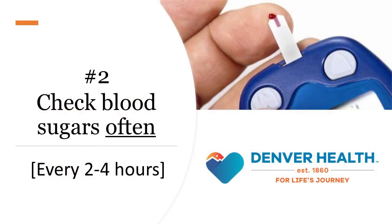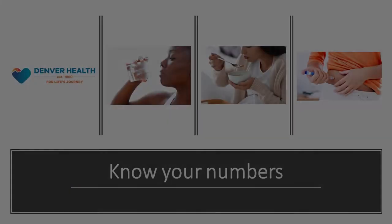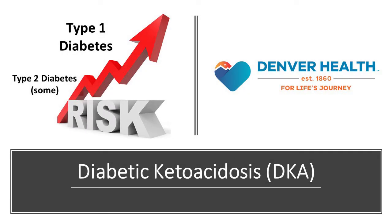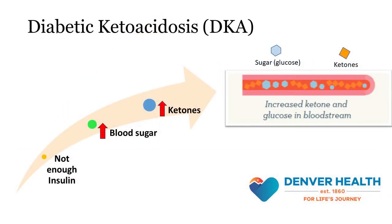2. Monitor blood sugar levels often, at least every 2-4 hours. It's important to know what your blood sugar levels are doing when you're sick so you can take appropriate action. Monitoring also lets you know if what you're doing is working. People with type 1 diabetes and some people with type 2 diabetes are at risk for developing diabetic ketoacidosis, or DKA, during illness. DKA occurs when there is little to no insulin available to help transport sugar into the cells of the body. When this happens, blood sugar levels will start to rise and blood acids, which are called ketones, will start to increase.